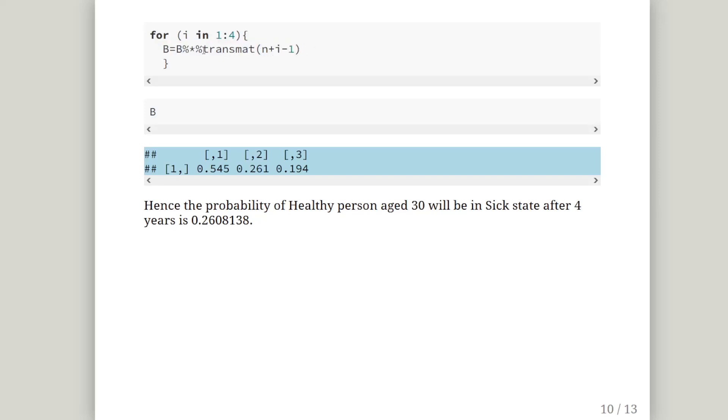Then when i is equal to 2, that becomes the transition matrix for a 31 year old. So b gets updated again. Then b is updated again for 32 year old, 33 year old, and then we're finished.